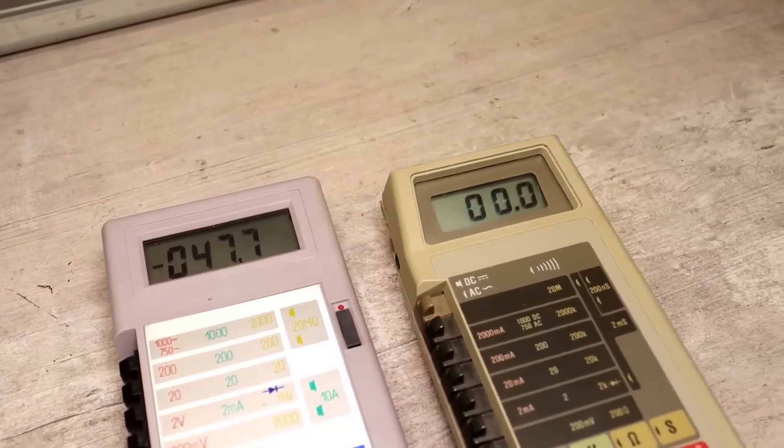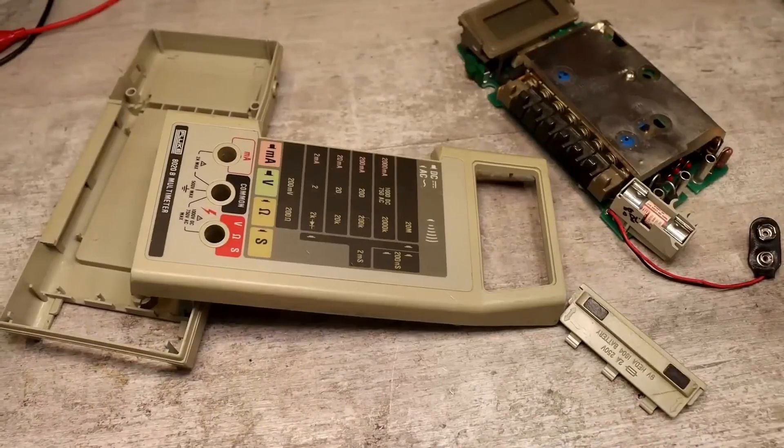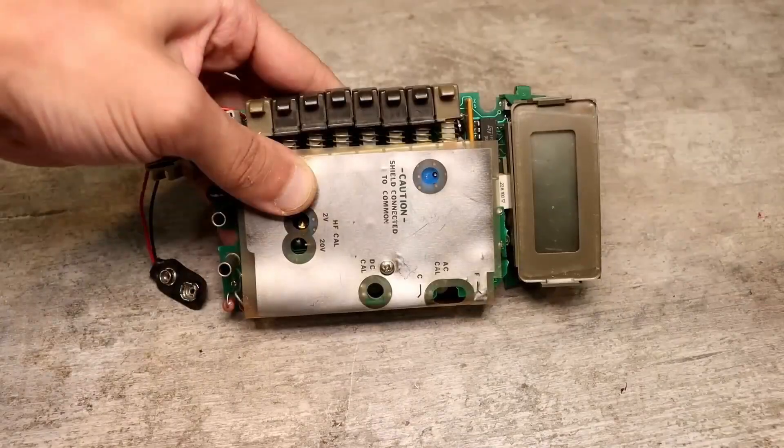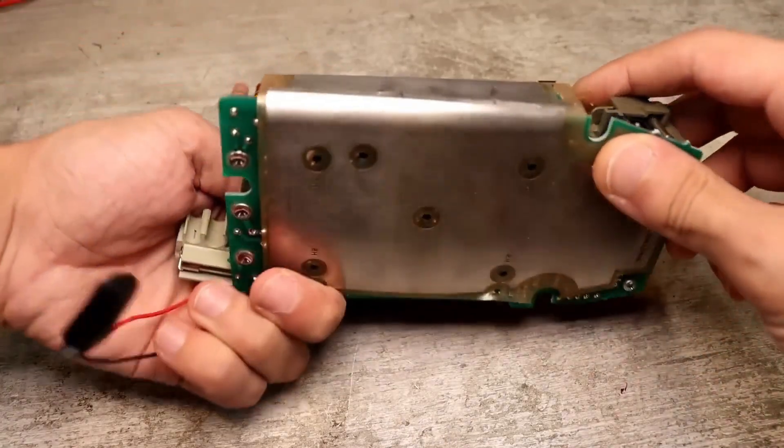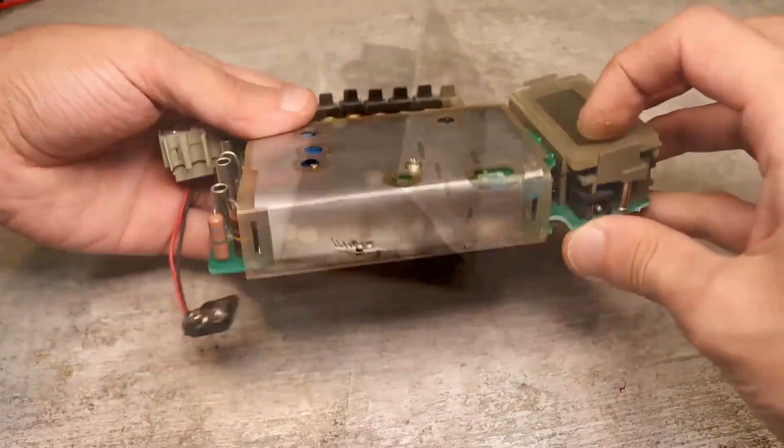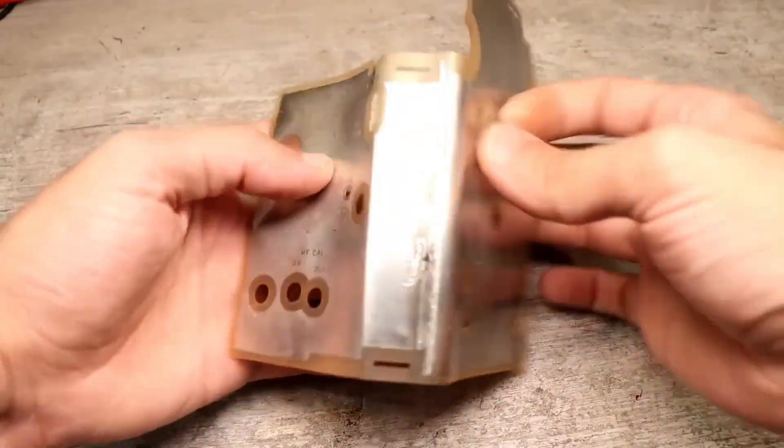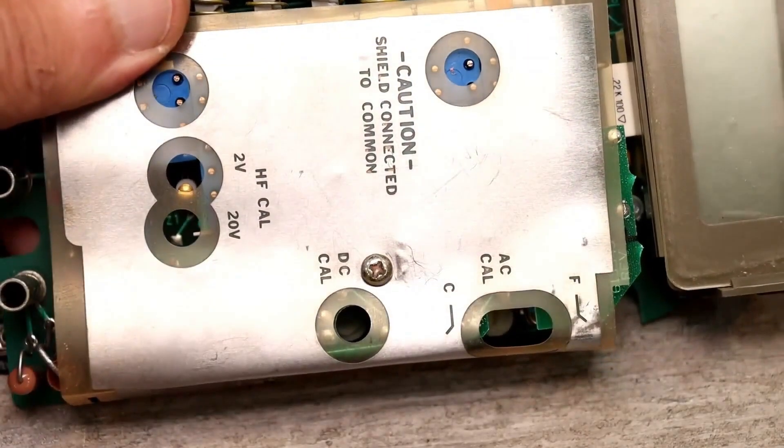So what now? It's time to get inside. And let's start with the American one. After opening it up, the first thing that catches the eye is the laminated metal shield of the main board. This means the multimeter is protected from various electromagnetic interferences. There is the possibility to calibrate current and voltage.